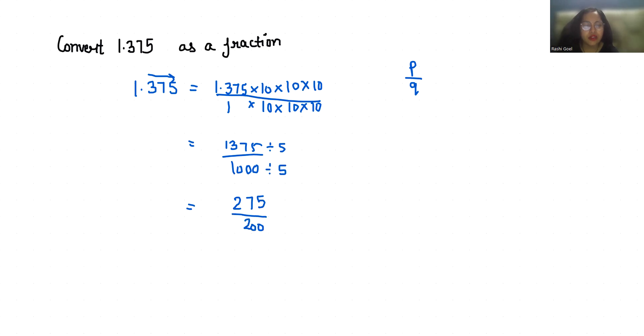Again we can reduce it more by dividing by 5 in numerator and denominator. So this gives us 55 by 40.